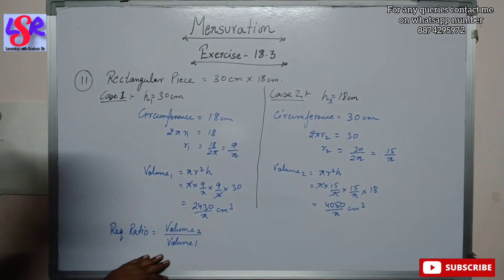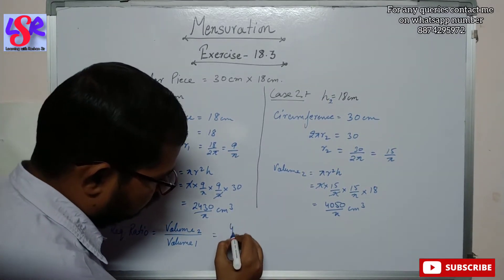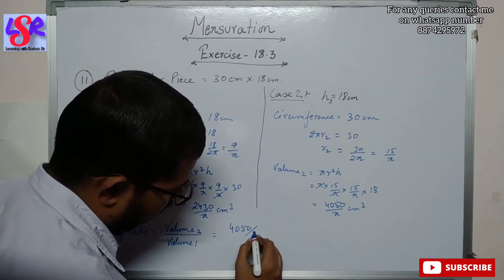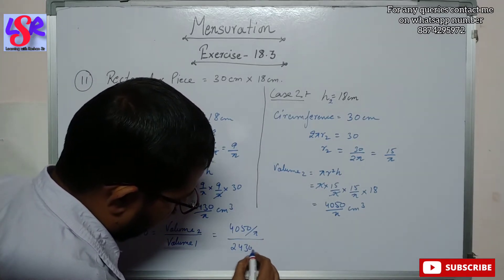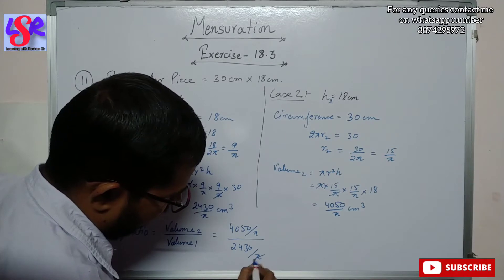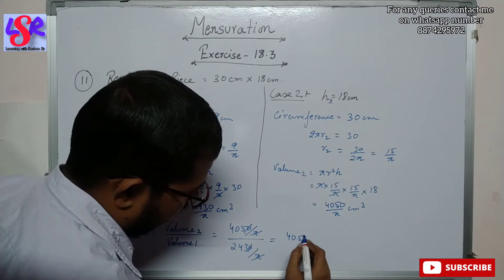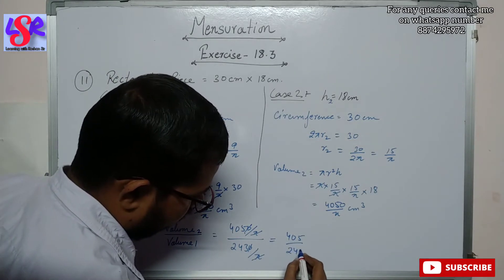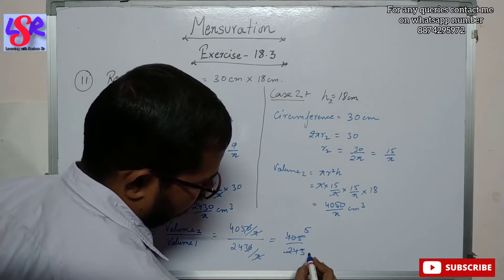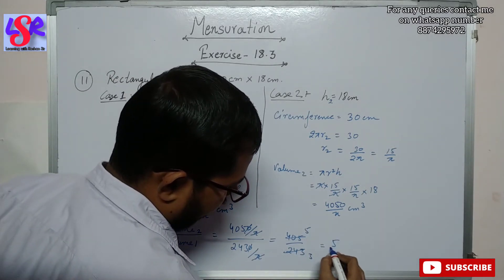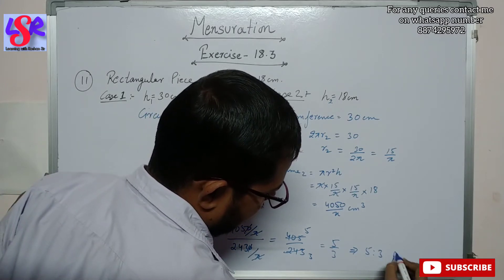The required ratio equals Volume 2 / Volume 1 = (4050/π) / (2430/π). The π cancels and a common factor of 10 also cancels, leaving 405/243. Since 81 goes into 405 five times and into 243 three times, we get 5/3, or 5:3 as the answer.